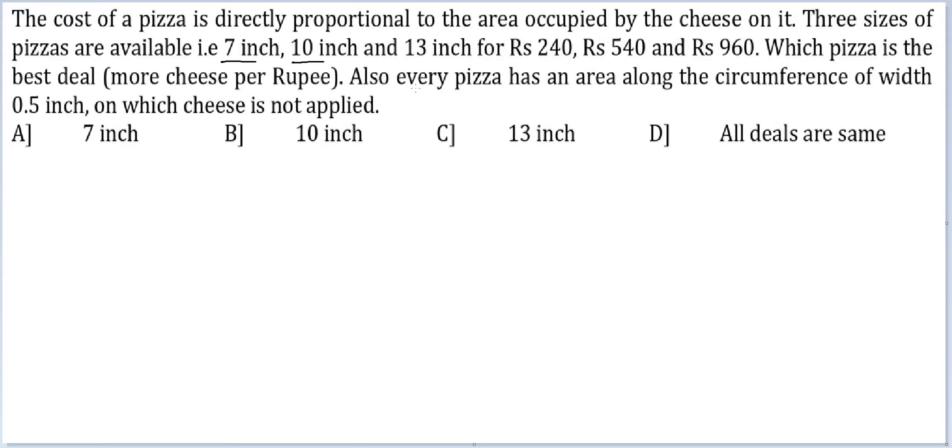Then I think the solving here would make sense. Let's say 7-inch, 0.5-inch on both sides is missed. So cheese is applied on a radius of 3 for pizza 1. For the second one, pizza 2, cheese is applied on a radius of 4.5. And for the third one, cheese is applied on a radius of 6.